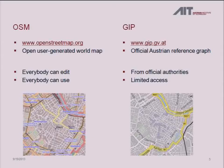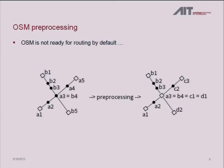Back to the street networks: OpenStreetMap — I'm sure you're all familiar — everyone can edit, everyone can use it. On the other hand, there is the Austrian street network graph, created by the authorities. Currently there's really limited access to it — you cannot even go there and buy it, they don't have a business model yet. You have to know someone who knows someone to probably get a copy, but that will hopefully change. Anyway, we got our hands on a copy and that's what I'll be talking about.